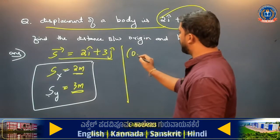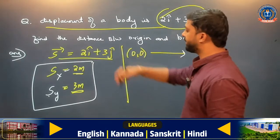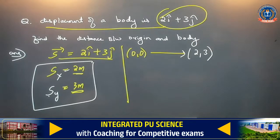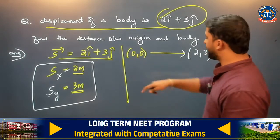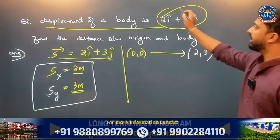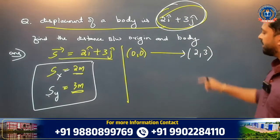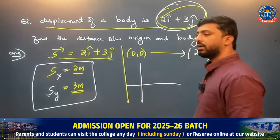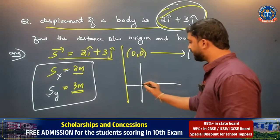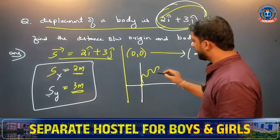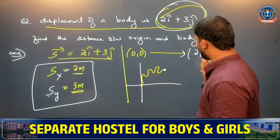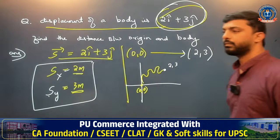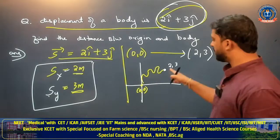Suppose the body has moved from the origin to some point (2, 3). So originally, the displacement is 2i plus 3j. We have an origin here. After travelling, it came to a final position where the coordinate is (2, 3). The initial position is (0, 0) — the origin — and it is now at (2, 3).